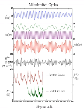Earth's movements: The Earth's rotation around its axis, and revolution around the Sun, evolve over time due to gravitational interactions with other bodies in the Solar System.